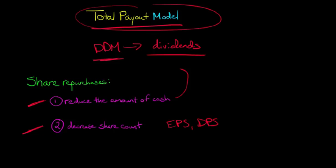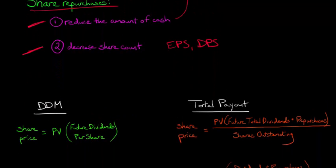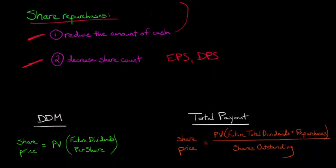So the total payout model attempts to address this deficiency of the DDM by accounting for share repurchases. So just to compare and contrast, with the dividend discount model, our share price is equal to essentially the present value of the future dividends per share. So it's just looking at the firm as a stream of dividends into the future and discounting those dividends back to the present.